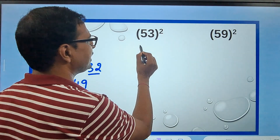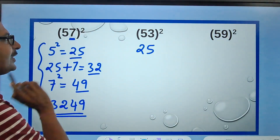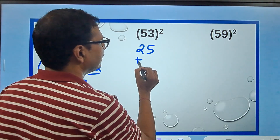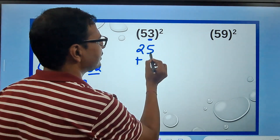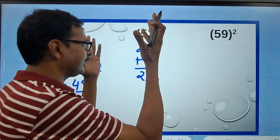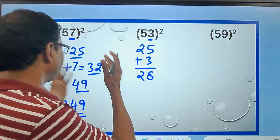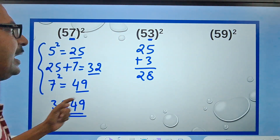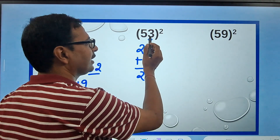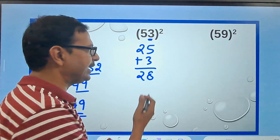5² is 25, we already know that. So you write 25 and then add the digit — here it's 3 — so you get 28. You can do 5² to get 25, add the other digit, and get 28.